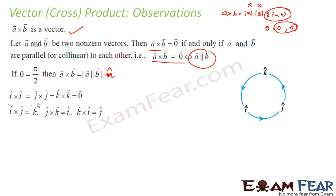Note that i cross i, j cross j, or k cross k all equal zero. In scalar product, i dot i equals 1, but in cross product i cross i equals zero. However, i cross j equals k, j cross k equals i, and k cross i equals j — it follows a circle. The reverse way is negative: j cross i equals minus k. You are moving from j to i, so you get the negative.